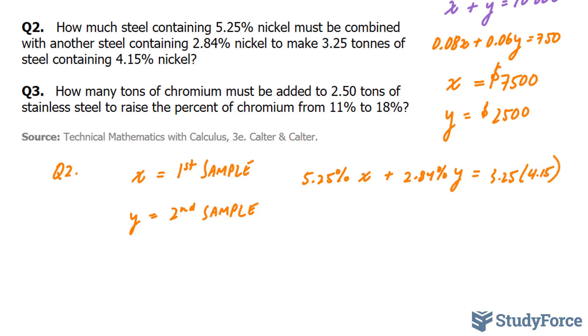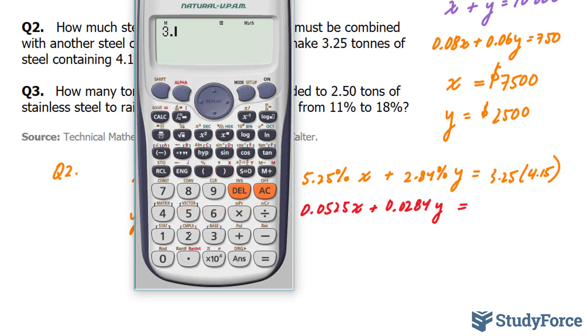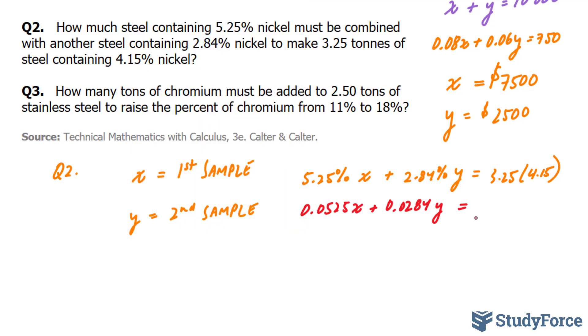So, let's convert this into decimals. We have 0.0525 times X plus 0.0284 times Y is equal to 3.25 times 0.0415. Remember, to convert this, which is a percentage, into decimal, and we have 0.134875.